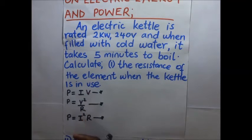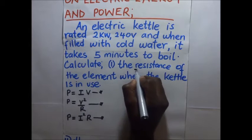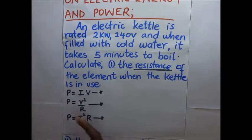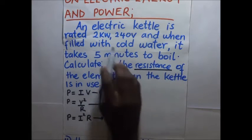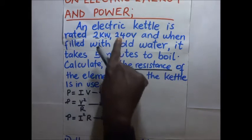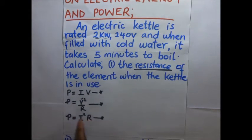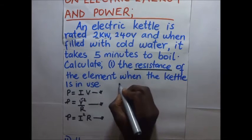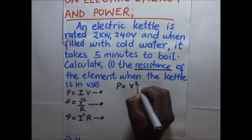We are supposed to choose from one of these three formulas to solve this problem. Since they're asking us to find the resistance, we concern ourselves with formulas that contain resistance — that's P = V²/R or P = I²R. From those two, we have power (2 kilowatts) and voltage (240V), but no current, so we select P = V²/R because it has power, voltage, and resistance.